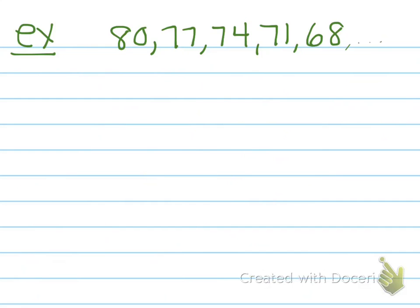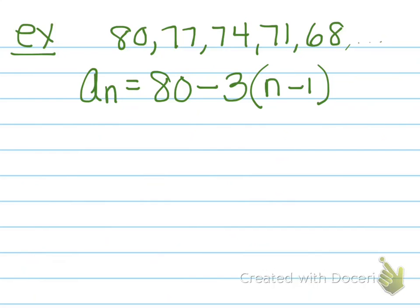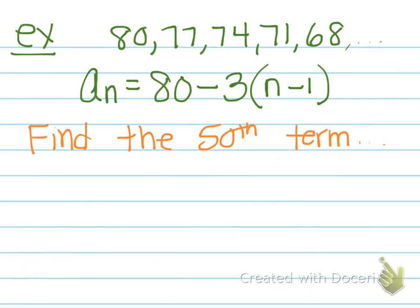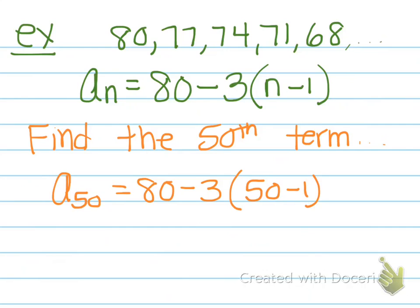Looking back at the first example, the explicit formula would be a sub n equals 80 plus negative 3 times n minus 1 — we can write that as minus 3 times n minus 1. We leave in n because we don't know what term number we are looking for. So if you wanted to find the 50th term, you would calculate a sub 50 equals 80 minus 3 times 50 minus 1, which gives negative 67. So the 50th term in this sequence is negative 67.